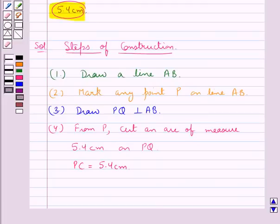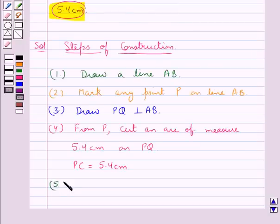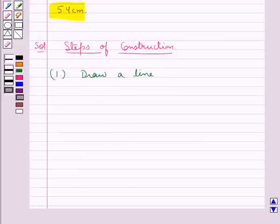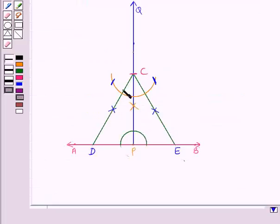Now we know that in equilateral triangle all the angles are of measure 60 degrees. So at point C we will construct an angle PCD equal to 30 degrees. So this angle PCD is of measure 30 degrees and angle PCE is also of measure 30 degrees. So this total becomes 60 degrees.